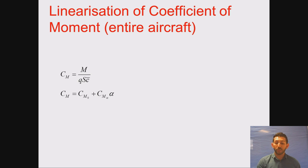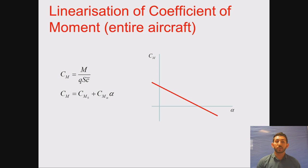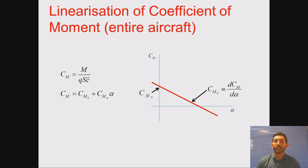Similarly, a coefficient of moment graph — Cm versus alpha — can be produced, with a y-intercept Cm0 representing the coefficient of moment at zero angle of attack, and a gradient term Cm_alpha, or DCm/D-alpha.